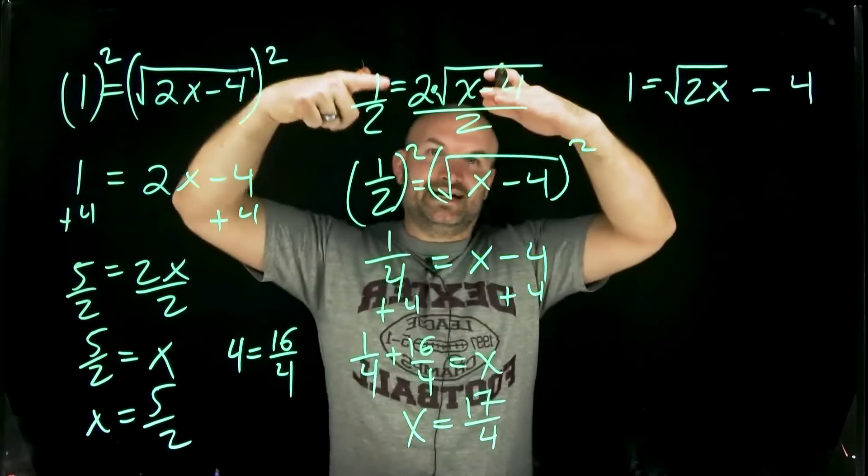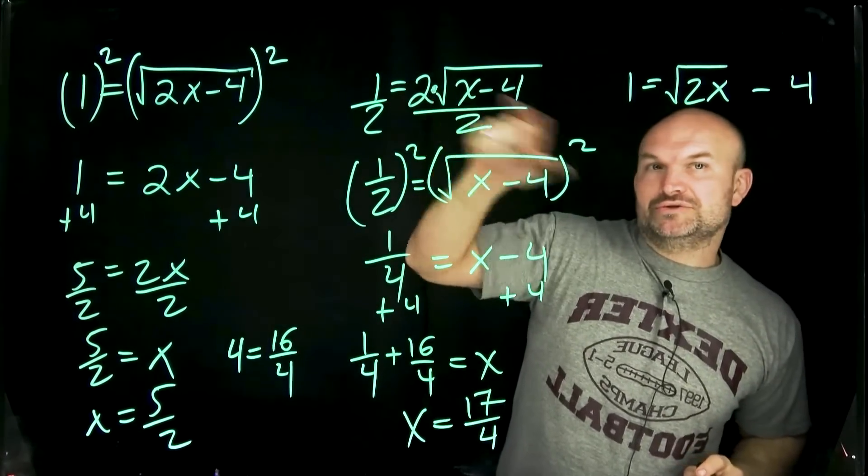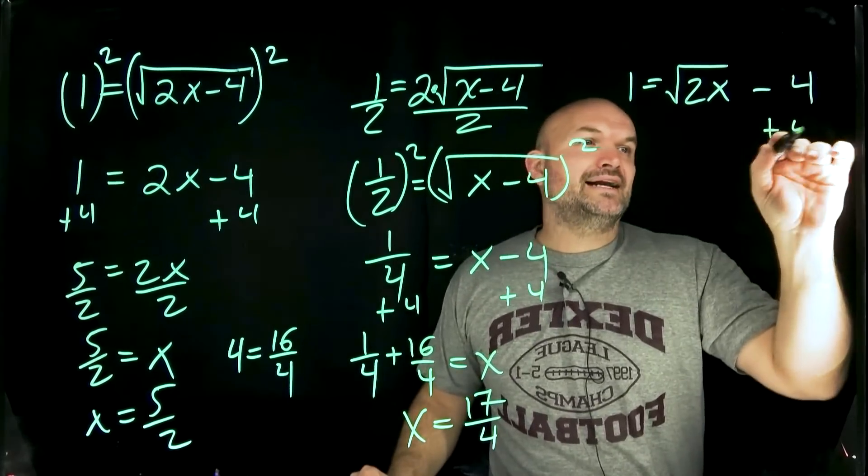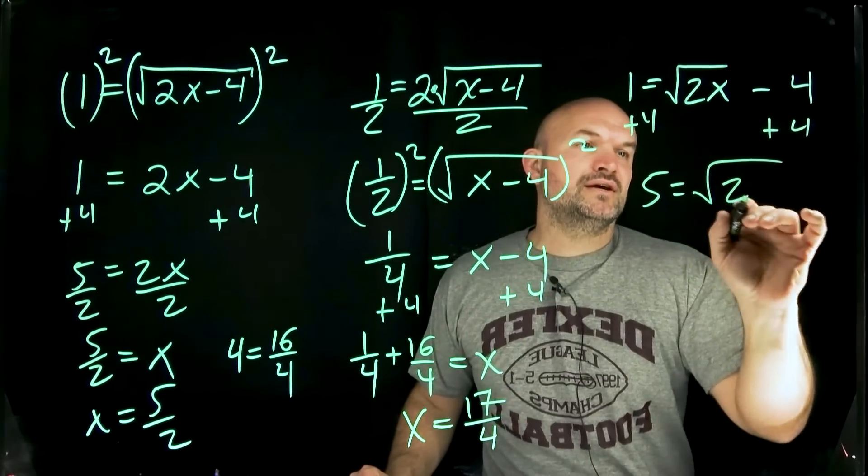Now over here it's the exact same idea and process that we did over here. Over here we wanted to get rid of the multiplication by 2 so we divided by 2. Here we want to undo the subtraction of 4 so therefore we're going to add 4 to both sides. So 5 is equal to square root of 2x.